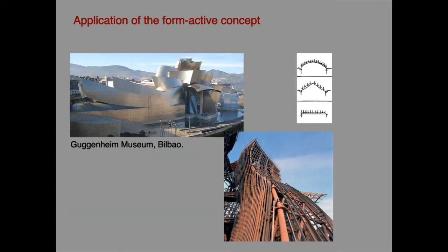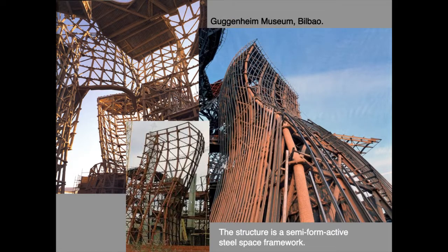Considering Frank Gehry's Guggenheim Museum, and knowing the sort of curve which is form active for distributed loads, it can immediately be seen that this is not a form active structure. It is also not a non-form active structure, but there will nevertheless be a need to resist considerable amounts of bending. The supporting structure is a steel framework which incorporates a substantial amount of material. This is an inefficient semi-form active form.